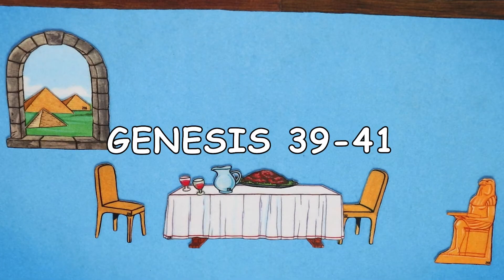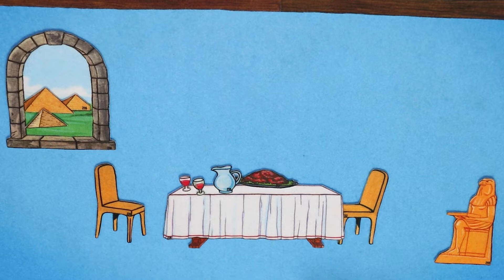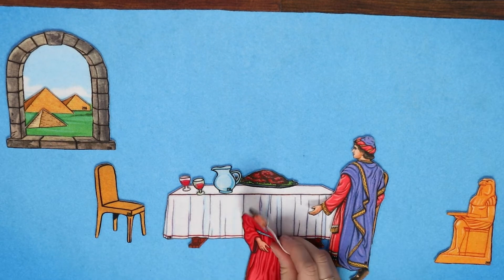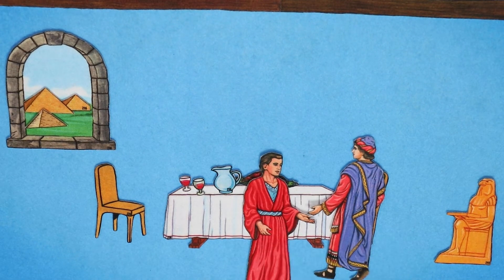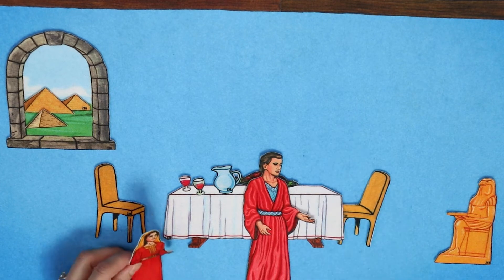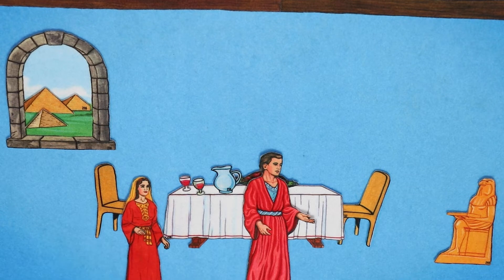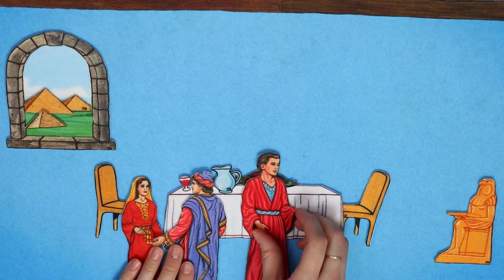Genesis 39 to 41. The travelers who brought Joseph took him to Egypt and sold him to an Egyptian officer named Potiphar. God was with Joseph and made him successful at everything he did. Potiphar put Joseph in charge as his personal assistant. One day, Potiphar's wife tried to get Joseph to sin against God and Potiphar, but Joseph refused. This made her angry and she accused Joseph of doing something he didn't do. Potiphar believed his wife and Joseph went to jail, but God was still with Joseph and blessed him.